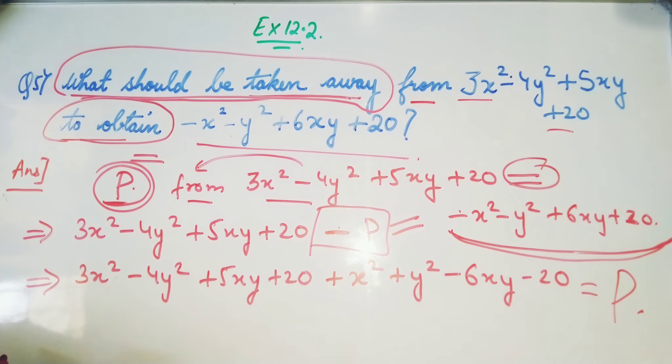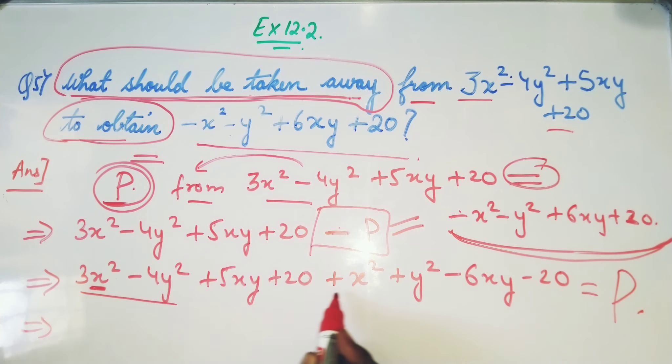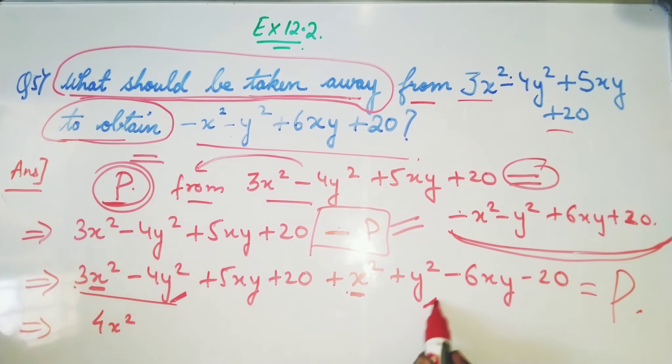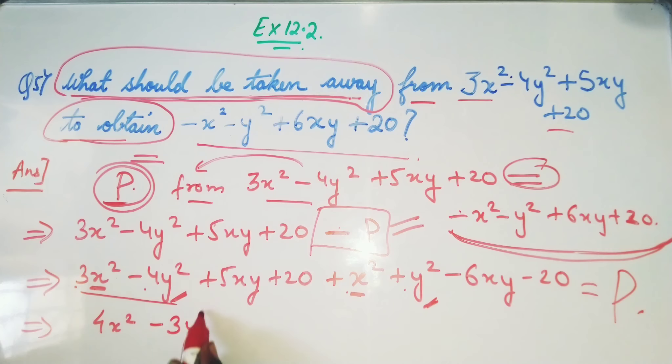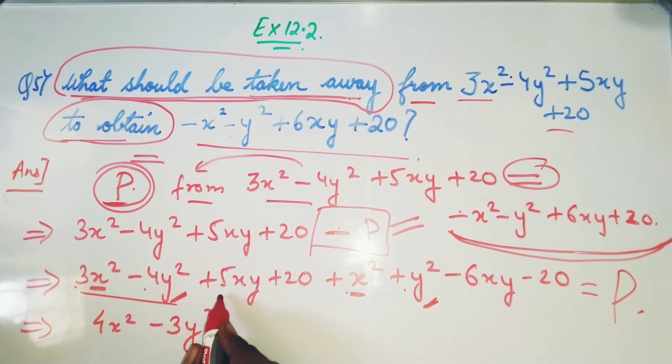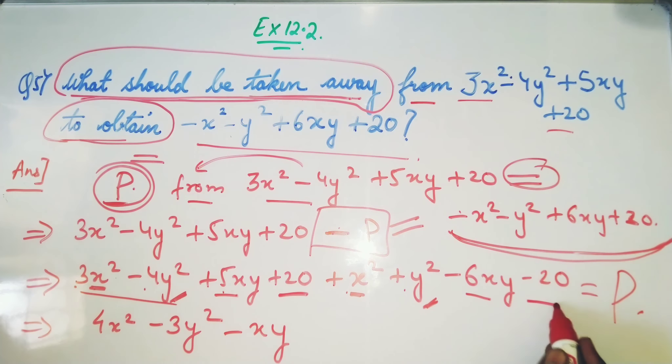Now the point here is you need to just do the combining of like terms. x² and x² I can combine, so 3 plus 1 is 4, so 4x². -4y² and y², so -4 plus 1 is -3y². 5xy minus 6xy is -xy. Plus 20 minus 20 get cancelled, so it's basically zero. So this will be the final answer: 4x² - 3y² - xy.